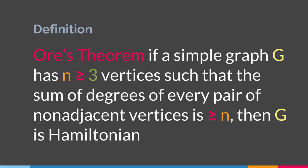Ore's Theorem says that if a simple graph G has a number of vertices equal to or greater than 3 — such as 3, 4, 5, 6, and so on — such that the sum of degrees of every pair of non-adjacent vertices is equal to or greater than n, which is the number of vertices, then G is Hamiltonian. Meaning if we take every pair of non-adjacent vertices, sum their degrees, and compare it with the number of vertices, and if that sum is equal to or greater than the number of vertices, then that graph will be Hamiltonian. This is the sufficient condition for a graph to be Hamiltonian.